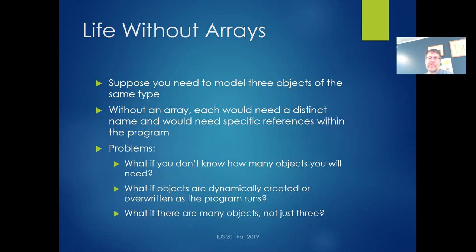And then, what if there are many objects, not just three? If you're talking about billions or even millions - in many cases even thousands would be a nightmare. Writing all those comparison statements and referencing the variables would just be horrible. So if you have a small number of variables, it's totally fine to just give them all individual names. But once your data starts getting large, especially if you don't know in advance how large it's going to be, you really need arrays to make your programs work.